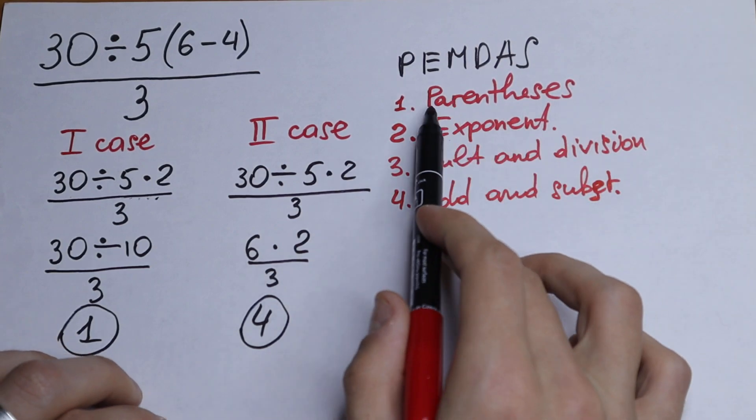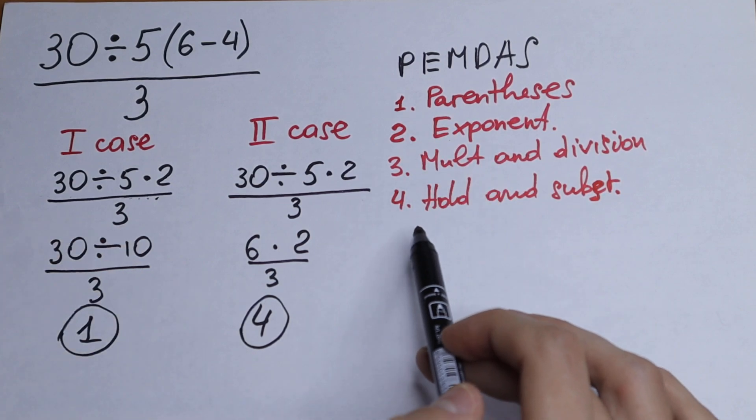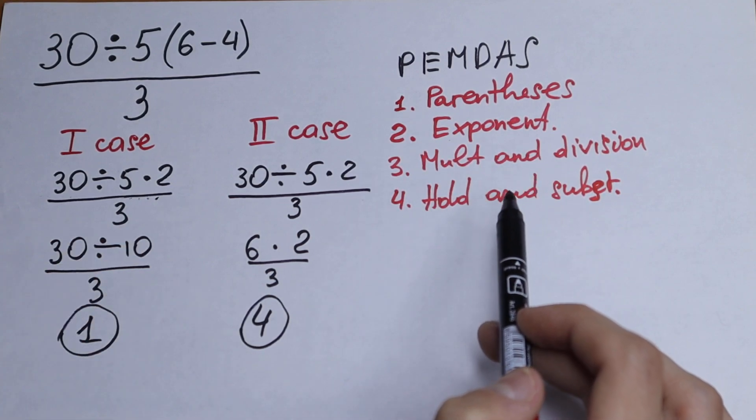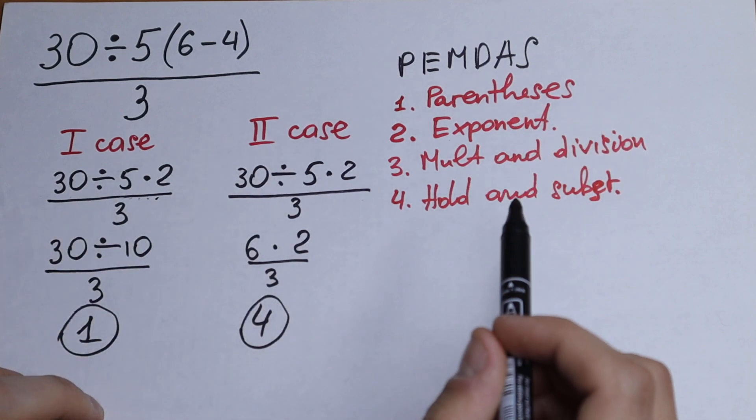So we have parentheses, then exponent, then multiplication and division, and addition and subtraction. But which one is correct?